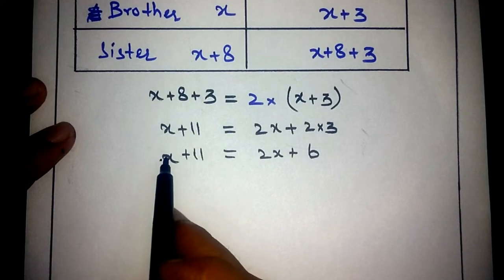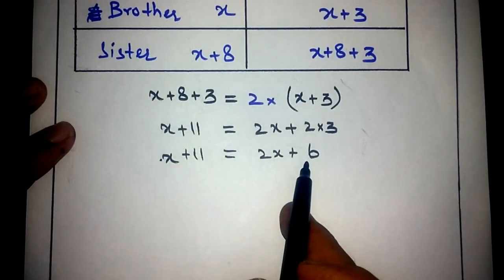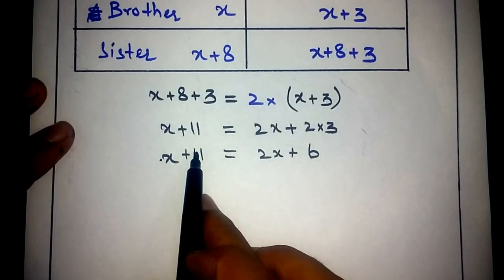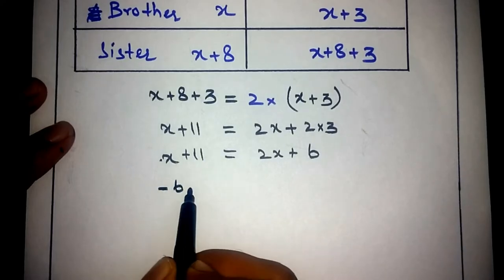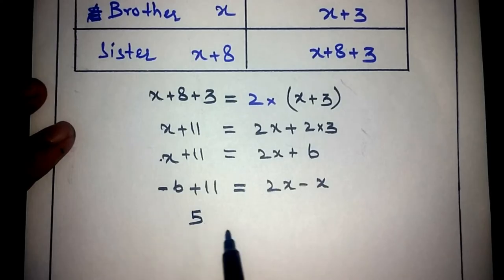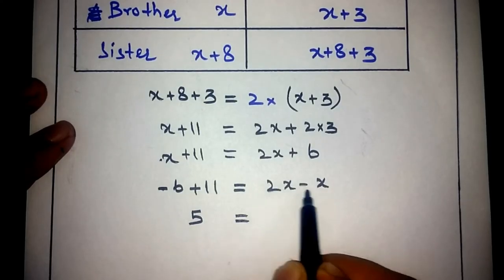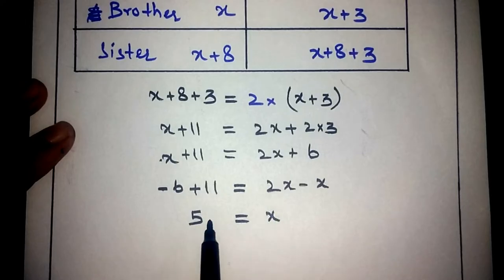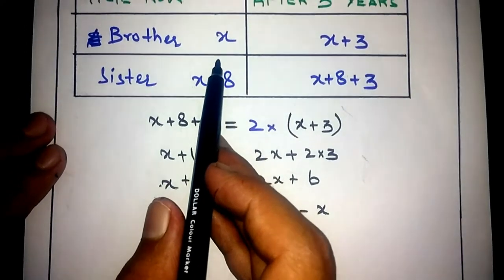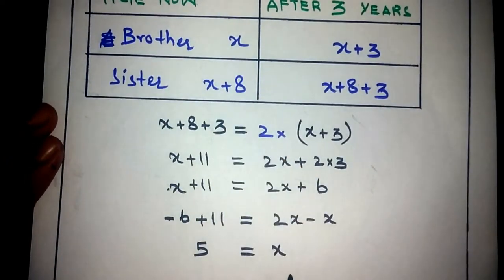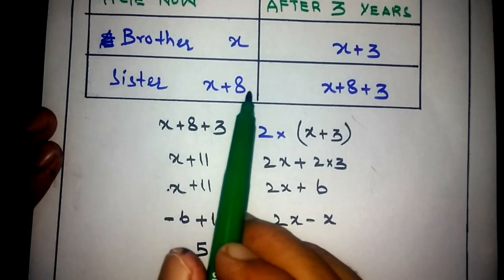This X is on the plus side, so when moved across the equal sign it becomes minus X. The 6 is also positive, so it becomes minus 6 on the other side. 2X minus X is just X, so we have found the value of X. The value of X represents the present age of the brother, and X equals 5.